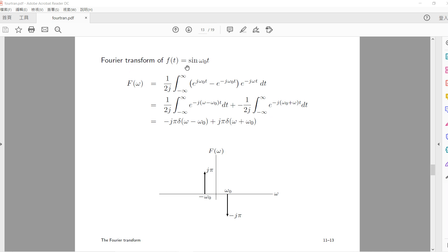So for this Fourier transformation of sine omega naught t, we just write it as 1 over 2j exponential j omega naught t minus exponential negative j omega naught t, right?